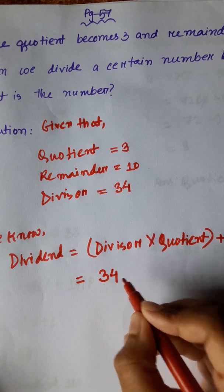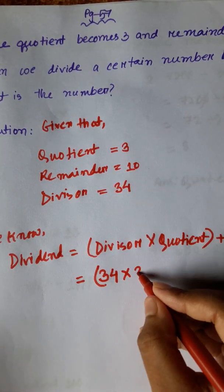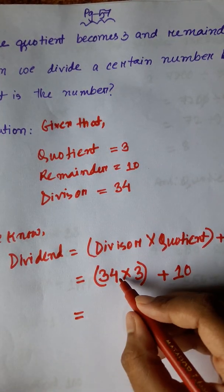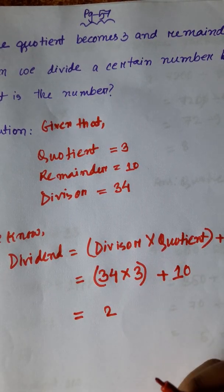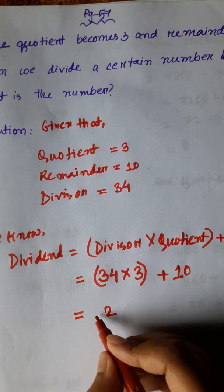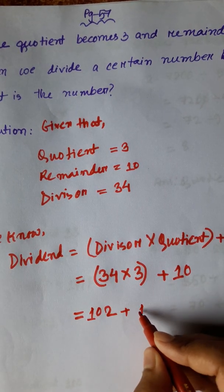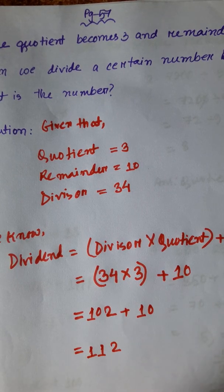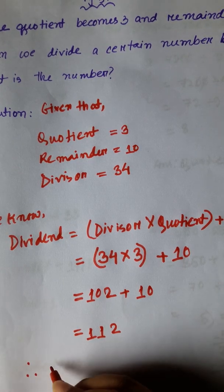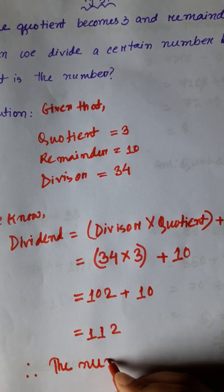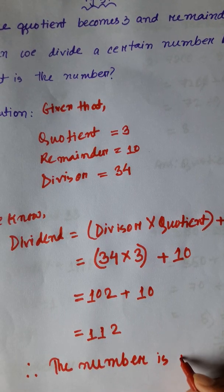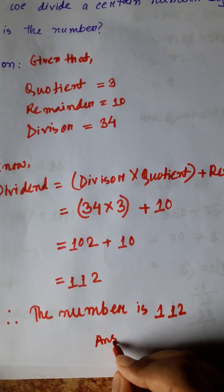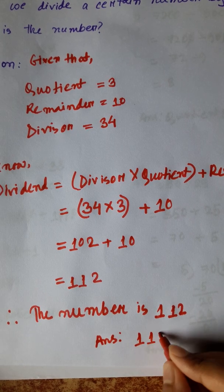34 into — quotient is 3, remainder is 10. Three fours are twelve, there is one in hand. Three threes are nine plus one is ten. So the number is 112. Answer is 112.